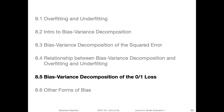Now, after we discussed the bias-variance decomposition of the squared error loss, and we briefly talked about the relationship between the bias-variance decomposition and overfitting and underfitting. In this video, we are going to talk about the bias-variance decomposition of the zero-one loss, which is a little bit trickier than the squared error loss, because the zero-one loss, if you recall, is a piecewise function.